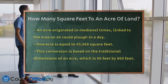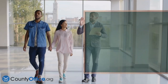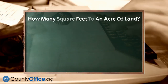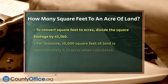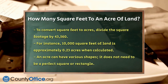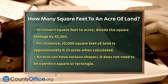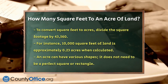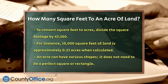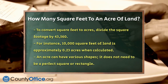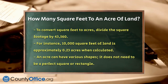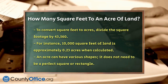To convert square feet to acres, you simply divide the number of square feet by 43,560. For example, if you have 10,000 square feet of land, you divide that by 43,560 and you get approximately 0.23 acres.